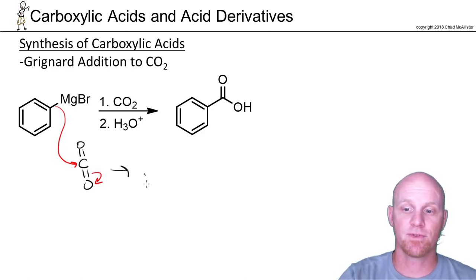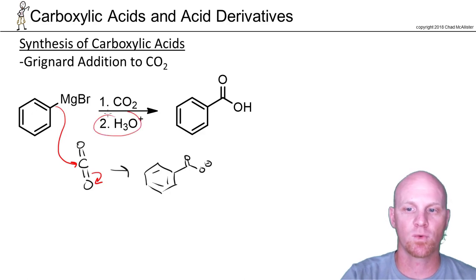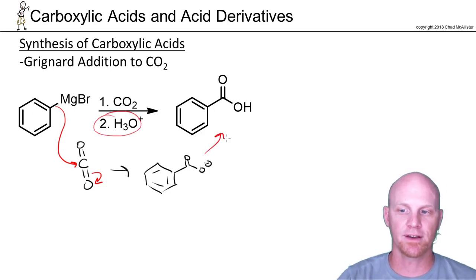That's where we do the acid workup step. The acid workup step is simply going to protonate it and get us our product. So we're still reacting a Grignard reagent with a carbonyl, just a very unique carbonyl in this case.